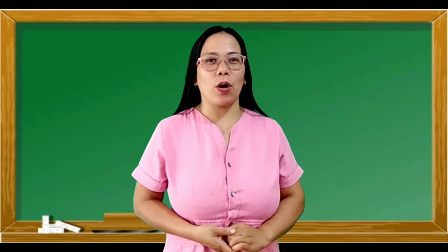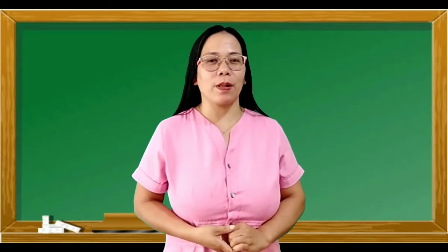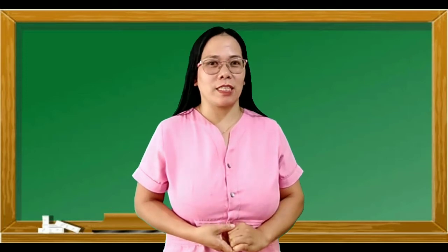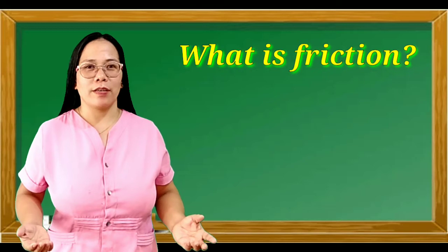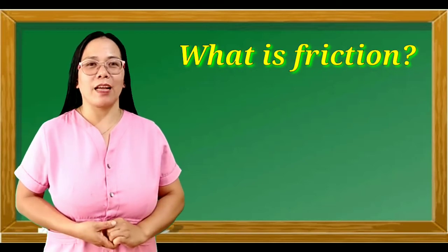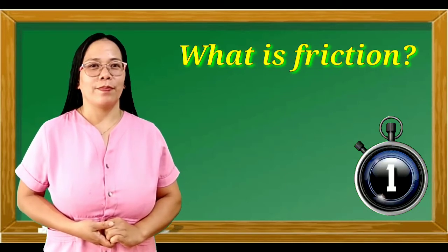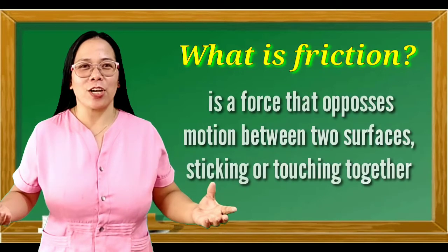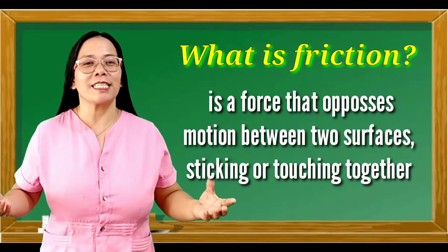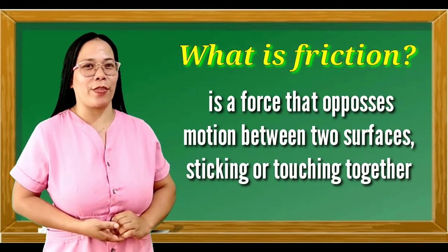Since you already know what friction is and the four types of friction with their examples, let's have some questions. Number one: what is friction? I will give you five seconds to answer. That's great! Friction is a force that opposes motion between two surfaces sticking or touching together.